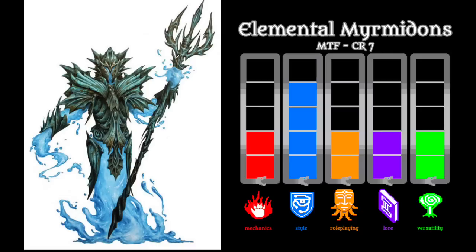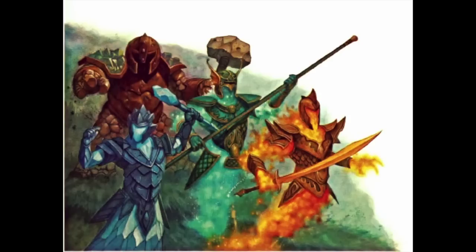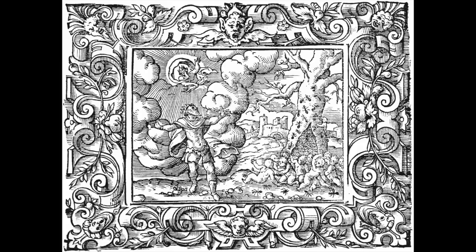I had wanted the Elemental Myrmidons to come after the base elementals, firstly because they build upon the standard elementals, and secondly because I had hoped they would be a little better overall. But to be honest, I think they actually fall slightly behind. What we have here are the four baseline elementals bound into suits of plate armor and equipped with weapons, summoned into existence by magic.